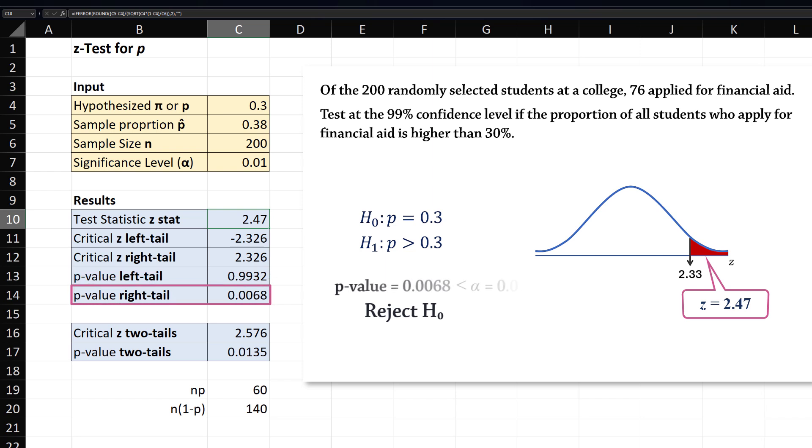The right-tailed p-value here is also less than alpha, agreeing with our decision to reject the null hypothesis. That is, we have enough evidence to conclude that the proportion of all students who apply for financial aid is higher than 30%.